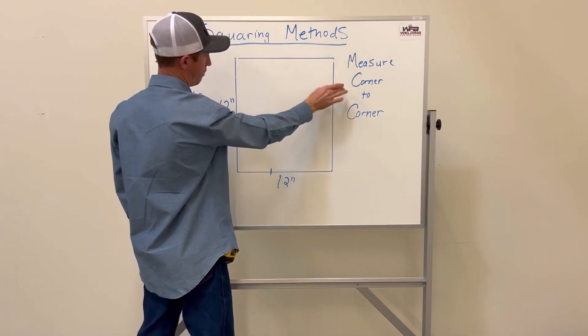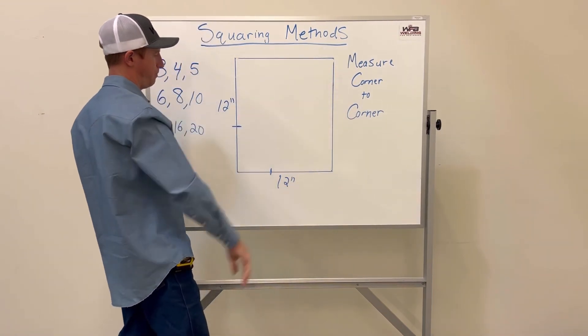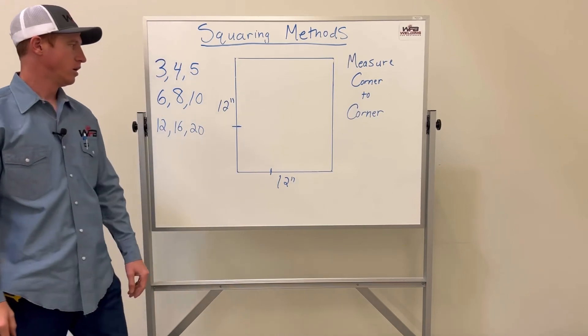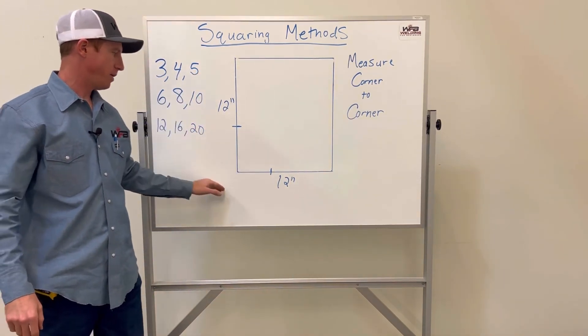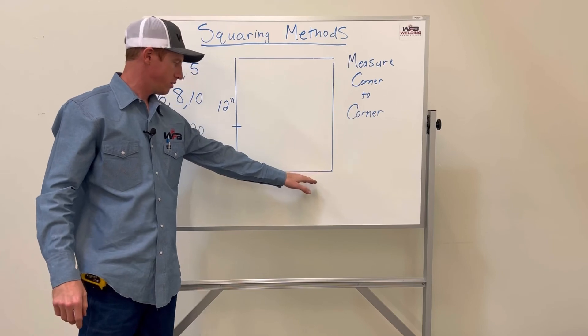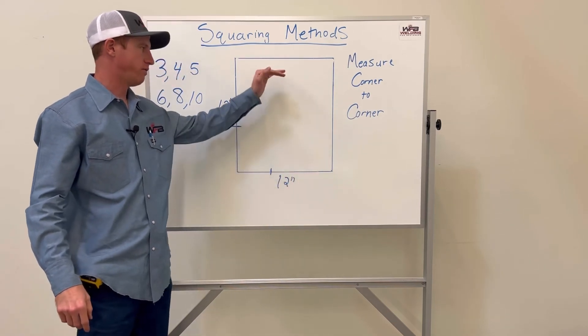You could do the reverse—you could do a 3-4-5 method here as well. But when I do the 3-4-5, I always make one perfect 90-degree corner and then work off of that.